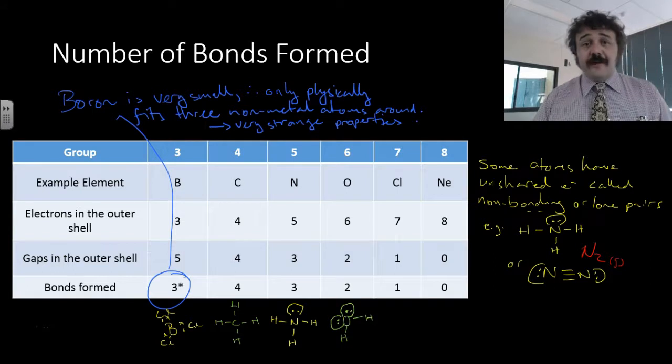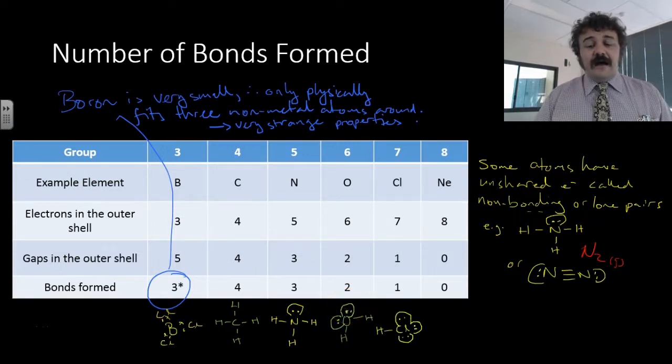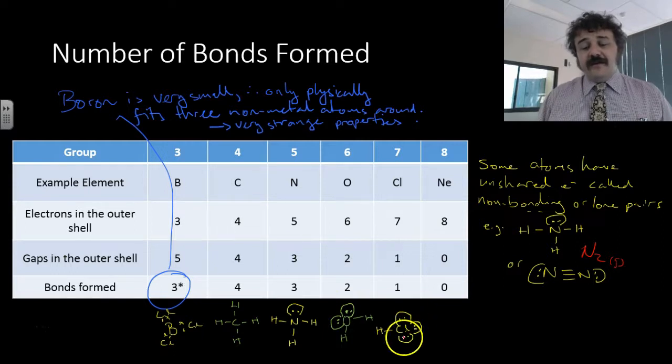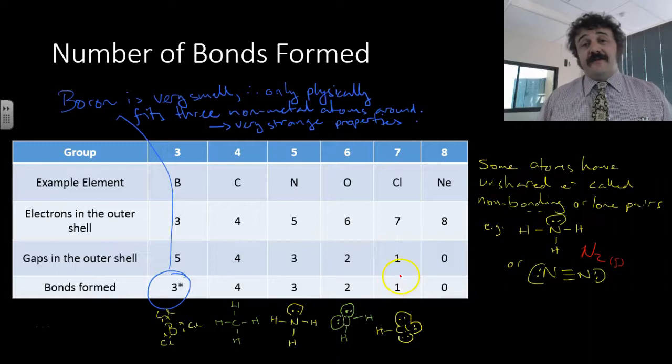Oxygen has two gaps, so it will form two bonds, which is why we have H2O. And you've got the two sets of non-bonding pairs right there. Chlorine has three non-bonding pairs and will form one bond, because it only needs one electron to fill that outer shell.